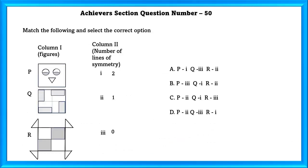Achievers Section Question Number 50: Match the following and select the correct option. Column 1 and column 2. Column 2 is based on the number of lines of symmetry. In the P figure, there is only one line of symmetry. In the R figure, there are two lines of symmetry. We will match P with option 2 and Q with option 3 and R with option 1, which leads us to the answer as D.